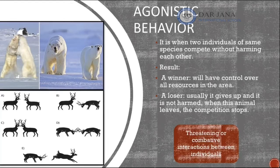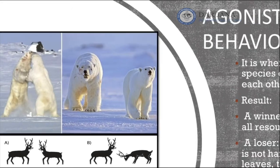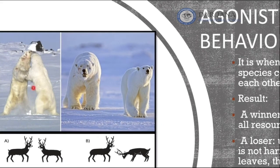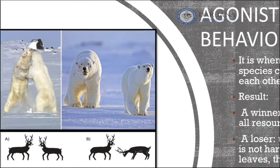This image shows the steps of agonistic behavior in which polar bears start fighting, but the result is that one gives up as the loser and one is the winner. Note that the loser will not have severe injuries — there is no death; the competition diminishes at the end.